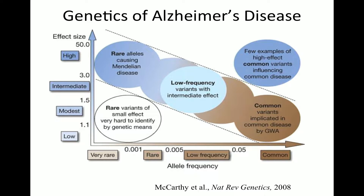Just a word or two about the genetics of Alzheimer's disease. On a standard plot with effect size on the Y-axis and allele frequency on the X-axis: there are three genes that cause autosomal dominant Alzheimer's disease at early age — monogenic disorders that help us understand molecular pathways. On the far right are recent GWAS hits from studies with 70,000 subjects — very common variants but with very small individual effect sizes.